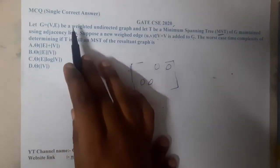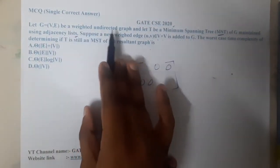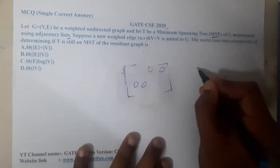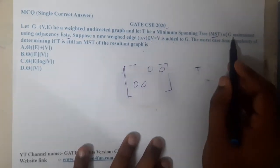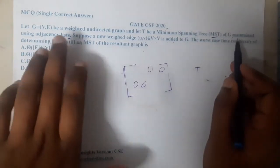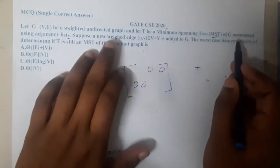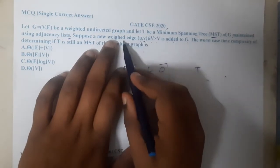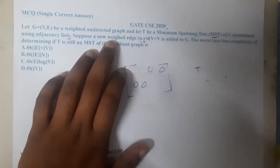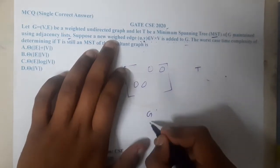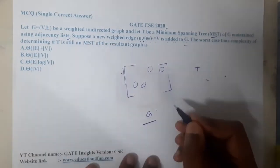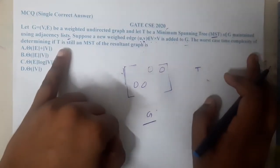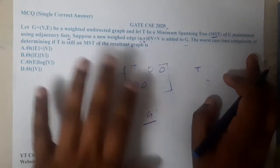To recap: G is a weighted undirected graph, T is the minimum spanning tree of G maintained using an adjacency list. A new weighted edge (u, v) is added to graph G, and we need to find the worst-case time complexity of determining whether T is still the minimum spanning tree or not.